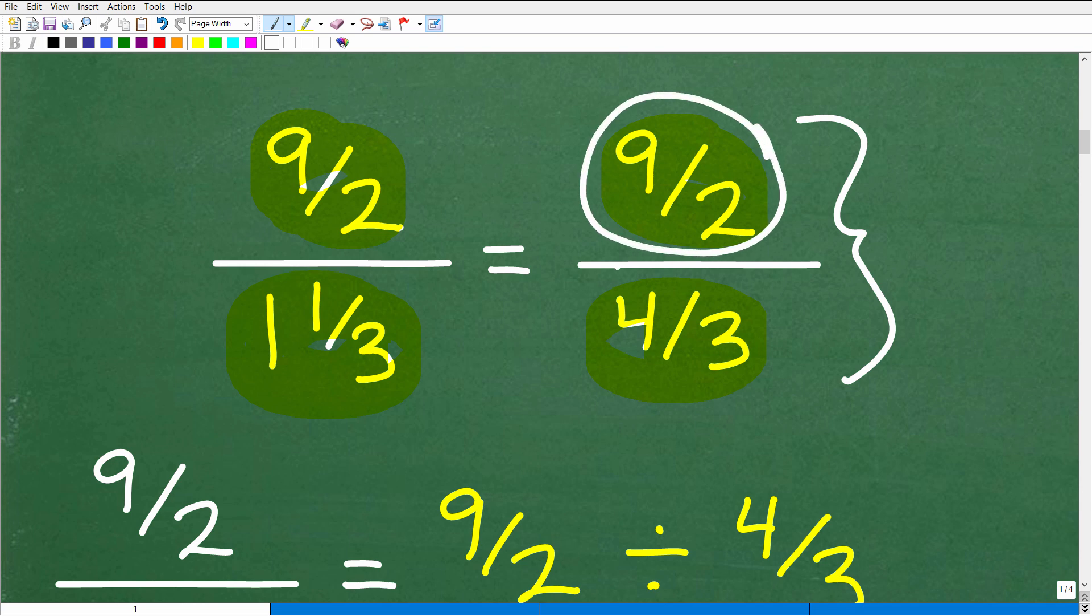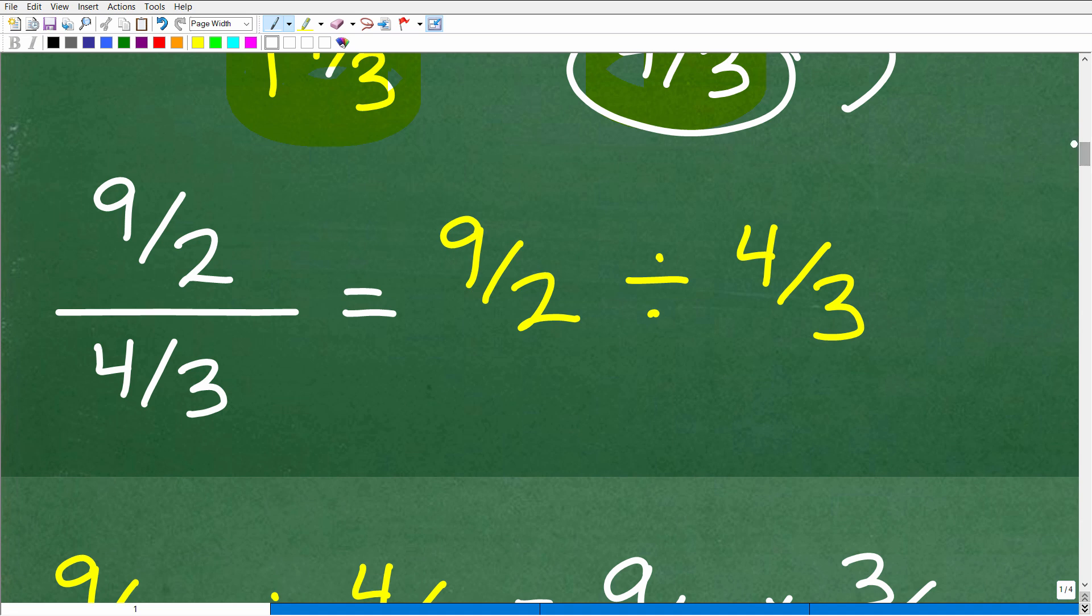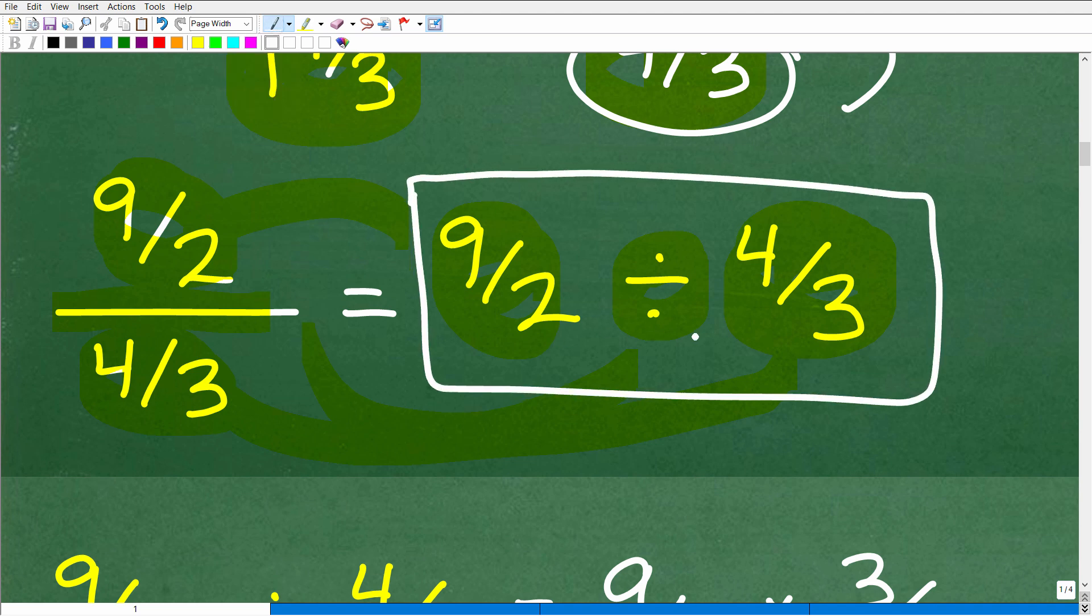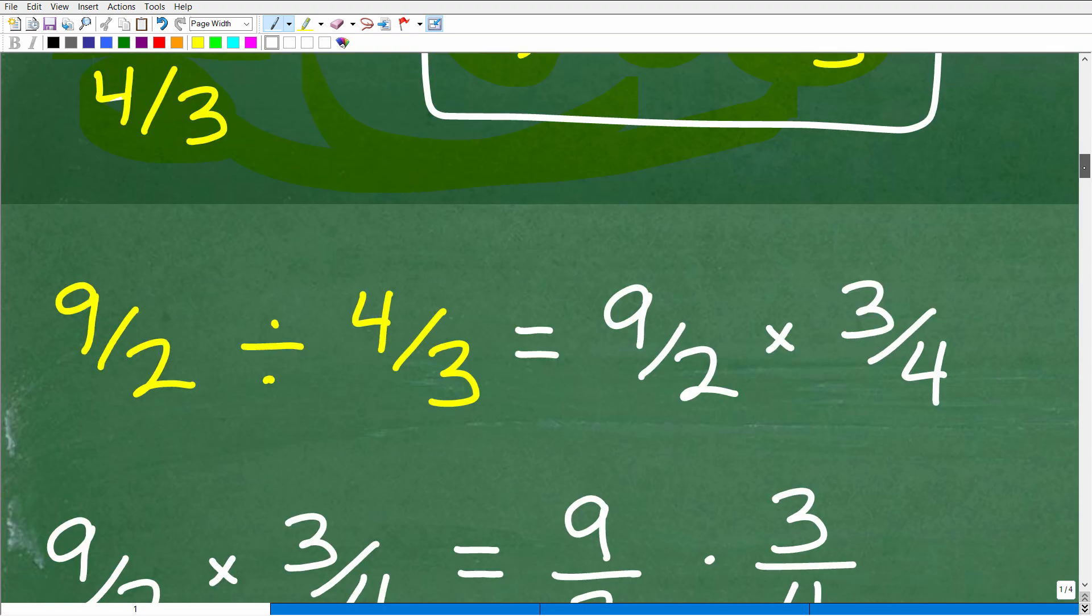Okay, so this is the problem that we have right now. So this is the numerator, and we're dividing it by this denominator right here. Remember, when you're dealing with fractions, the fraction bar in and of itself is the division operator. So you could substitute this fraction bar with this symbol. So 9 halves over 4 thirds is the same thing as 9 halves divided by 4 thirds. So now we're dealing with basic number operations with fractions. Let's go ahead and see how we take care of this.